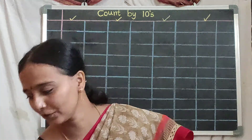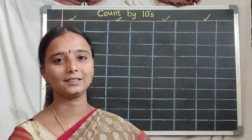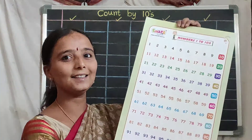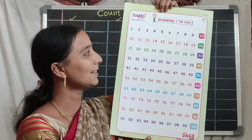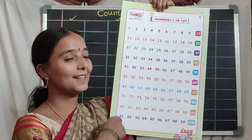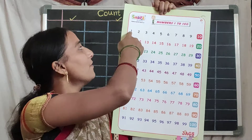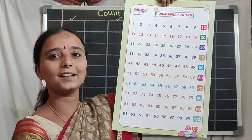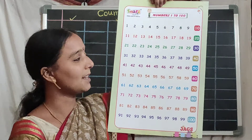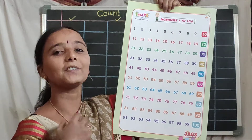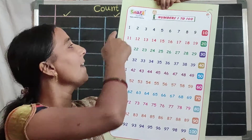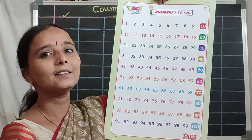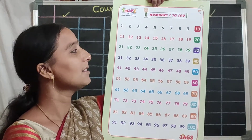All of you see this chart. What are these? These are 1 to 100 numbers. In this chart we can see 1 to 100 numbers.